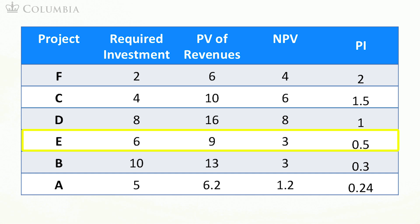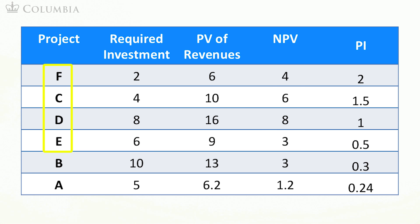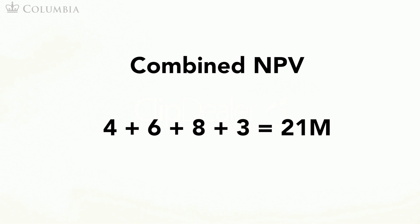The profitability index tells us that the best combination of projects is F, C, D, and E, with a combined NPV of 4 plus 6 plus 8 plus 3, or 21 million.